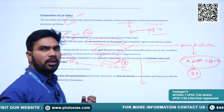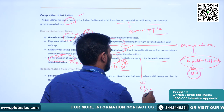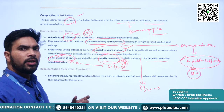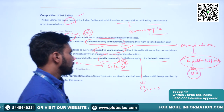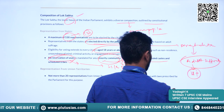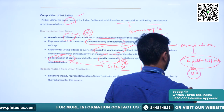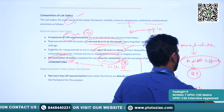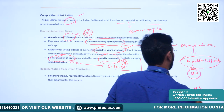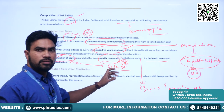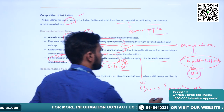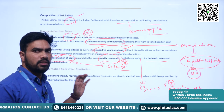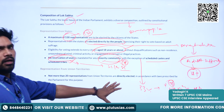Women have been given 33% reservation. Recently a constitutional amendment was made and it will come into effect once the census is held. The popular name of that bill is Nari Shakti Vandan Abhiyan. So earlier reservations were there for SCs and STs; now women have also been given 33% reservation in the Lok Sabha.